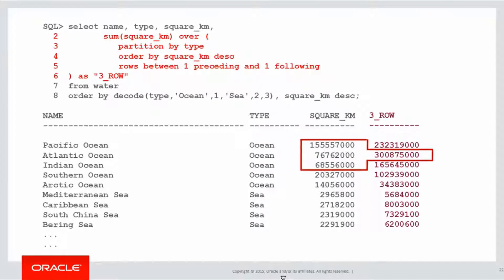As we move to the next row, we can once again scan the current row, look back one row, look forward one row, preceding and following as per the syntax, and we get 300 million, and we continue on down the table.